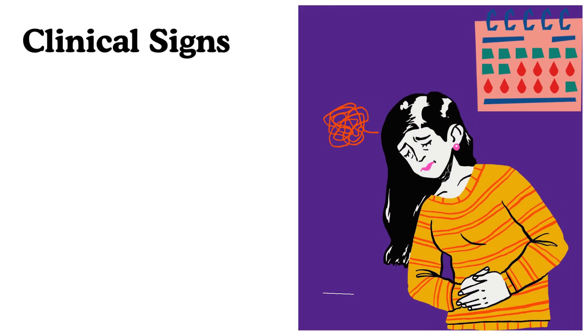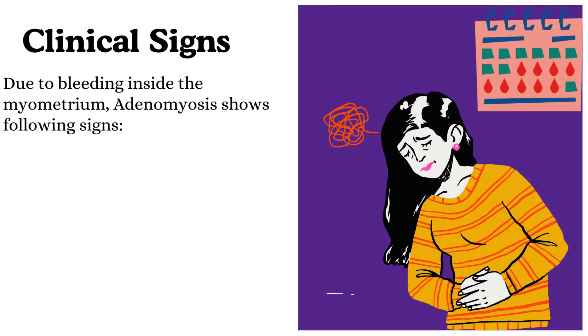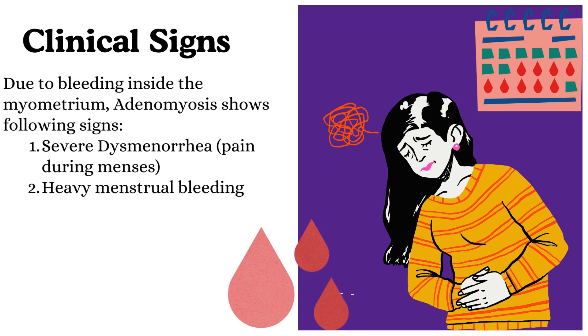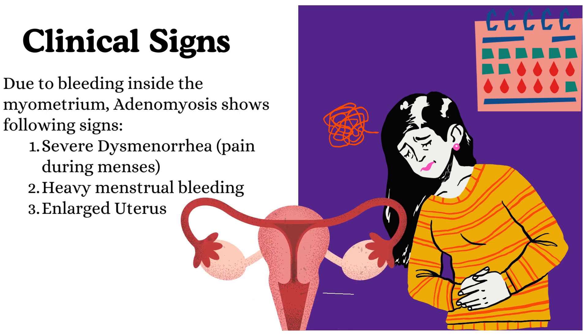Clinical signs: due to bleeding inside the myometrium, adenomyosis shows the following signs — severe dysmenorrhea, pain during menses, heavy menstrual bleeding, and enlarged uterus.